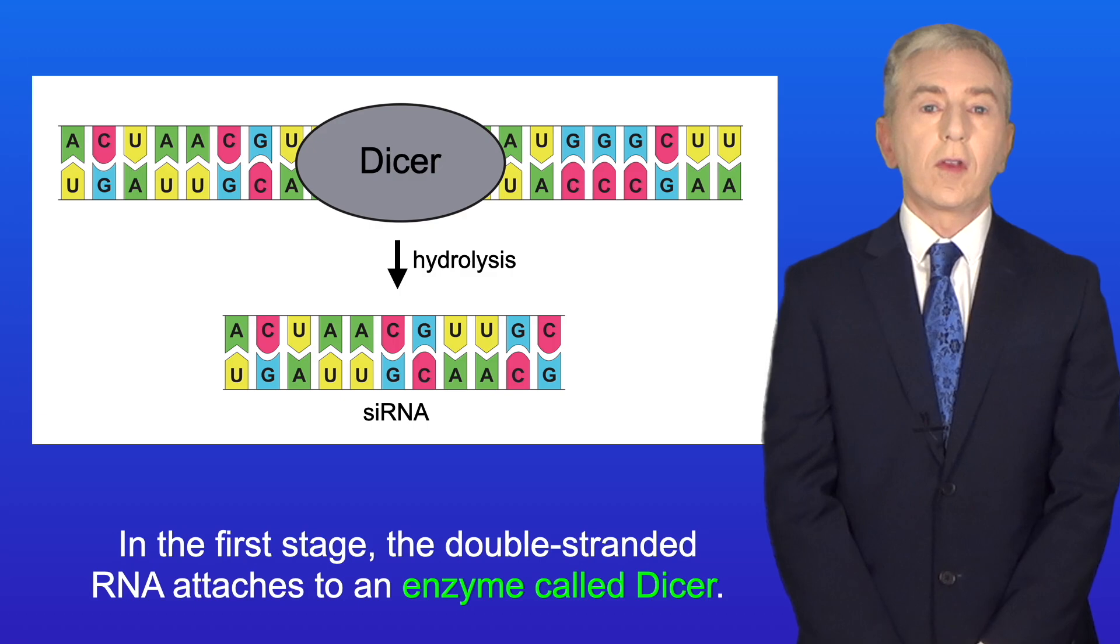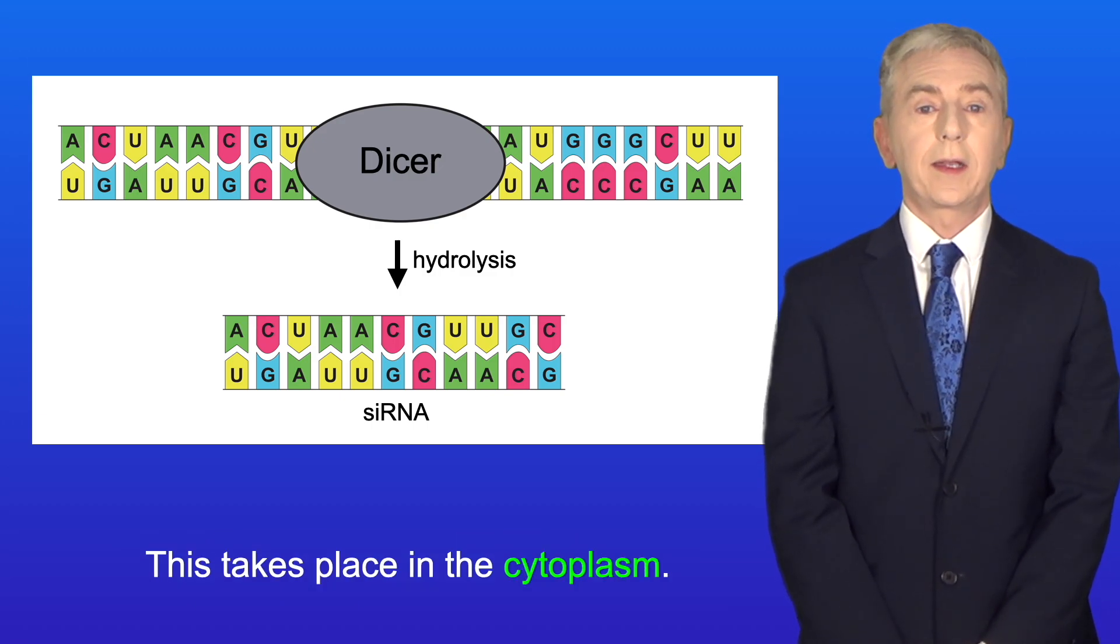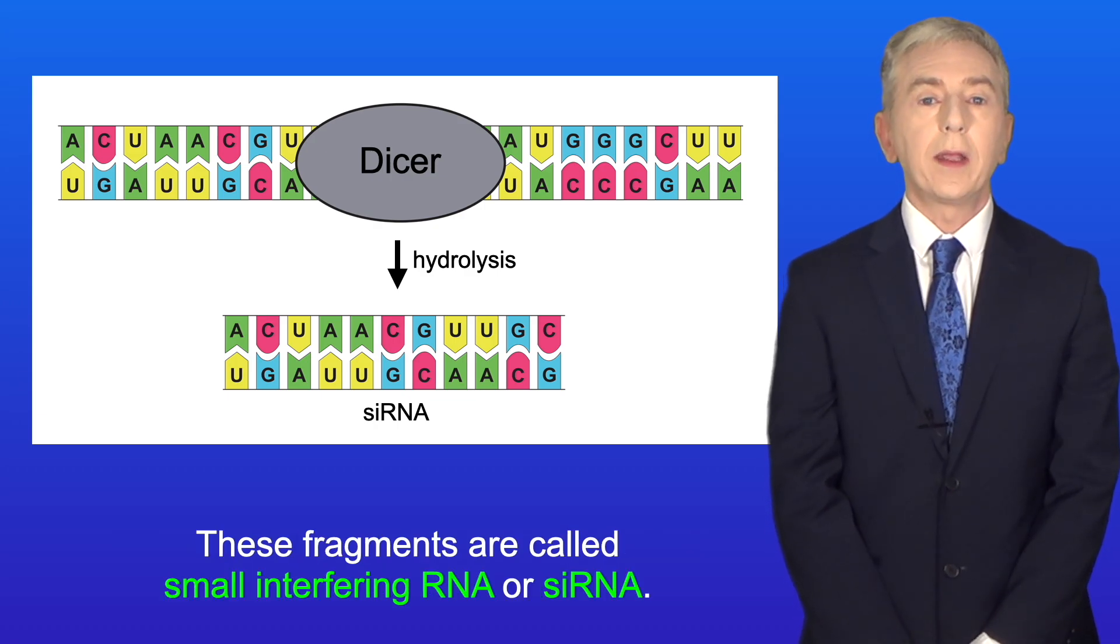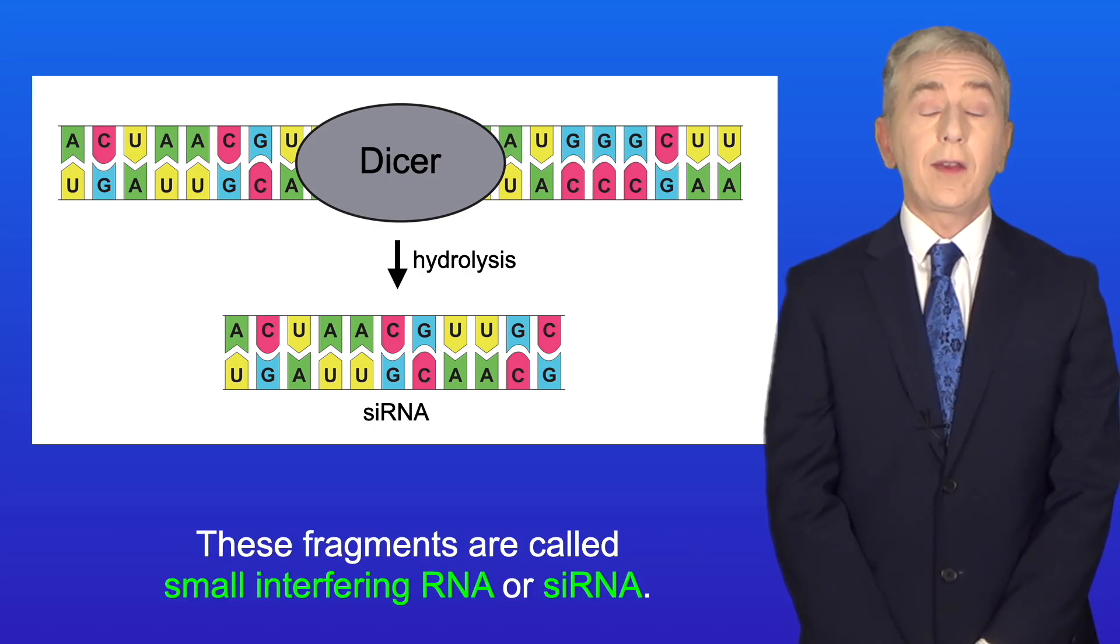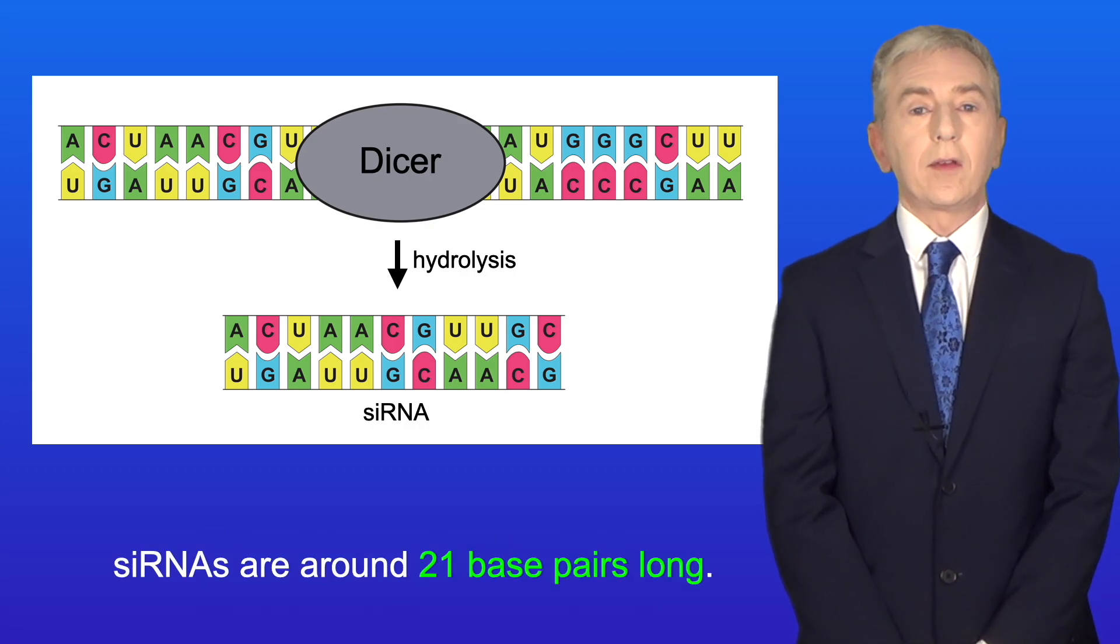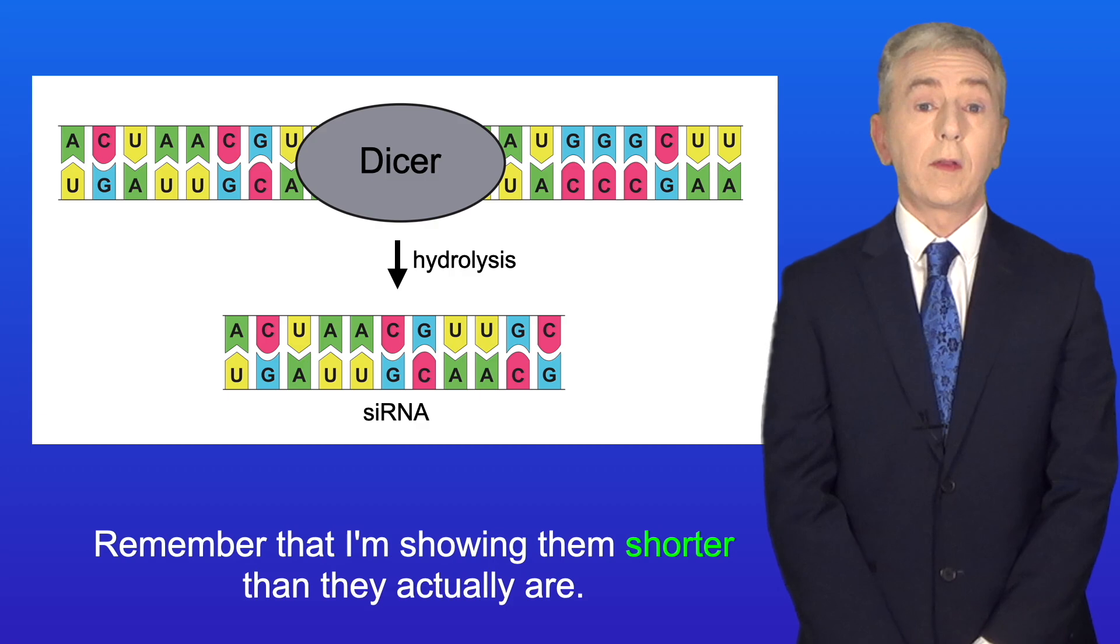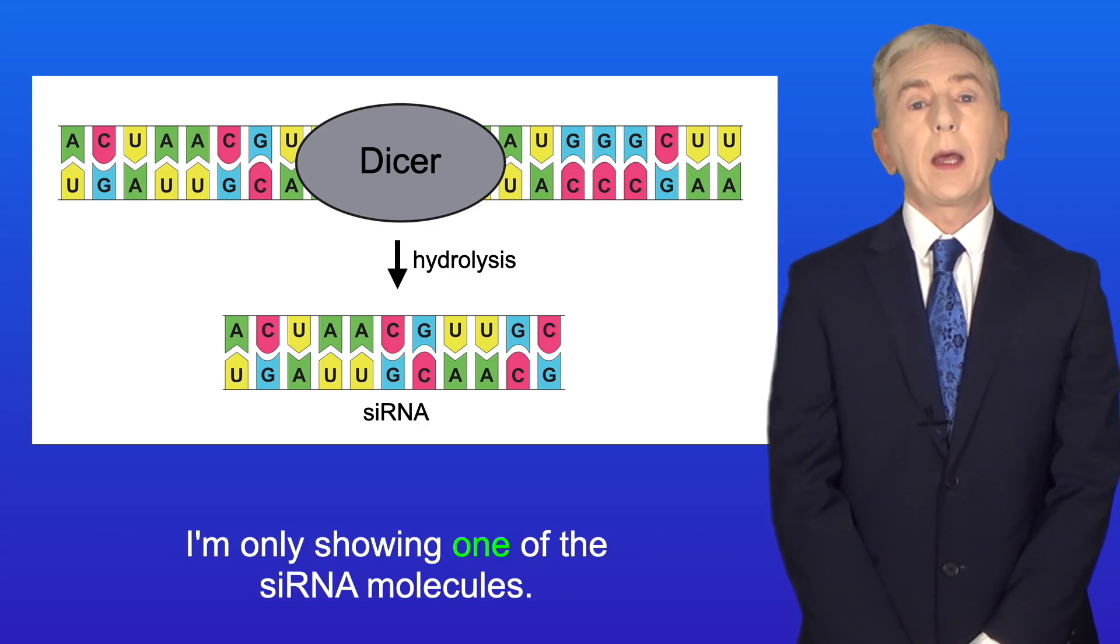Now in the first stage, the double-stranded RNA attaches to an enzyme called DICER. And this takes place in the cytoplasm. DICER hydrolyzes the double-stranded RNA into shorter fragments. These fragments are called small interfering RNA, or siRNA. SiRNAs are around 21 base pairs long, but remember that I'm showing them shorter than they actually are. And I'm only showing one of the siRNA molecules.